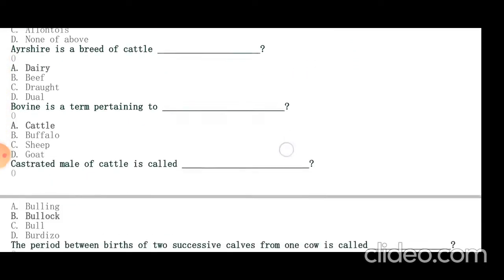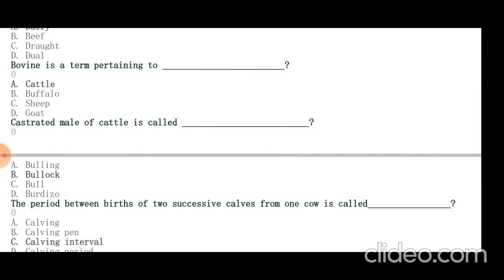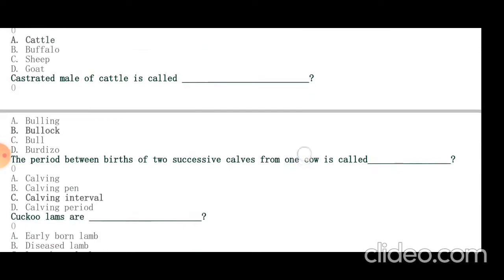Castrated male cattle is called bullock. The period between births of two consecutive calves from one cow is called calving interval.